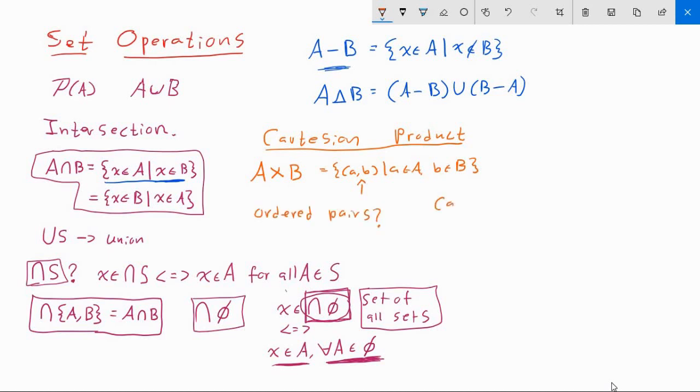As a first attempt, we might try and just say that the ordered pair A and B is just the set containing two elements A and B. The problem is this doesn't really give us a well-defined order to these elements because, as far as our axiom of extensionality tells us, this is equal to the set B comma A, and, in turn, that this is equal to the ordered pair B comma A. And we don't want this to be the case. So that won't do.